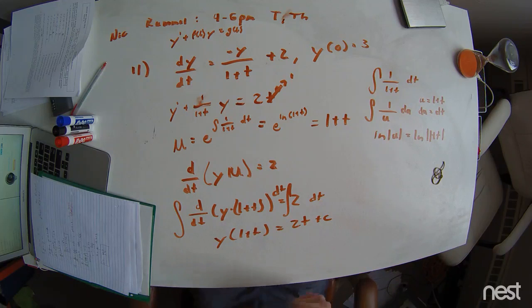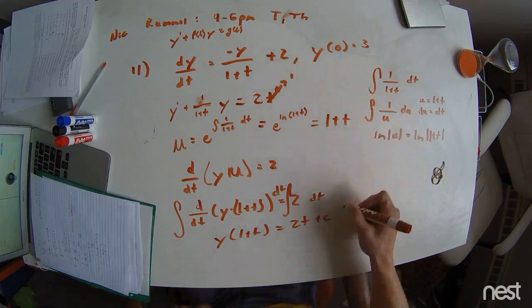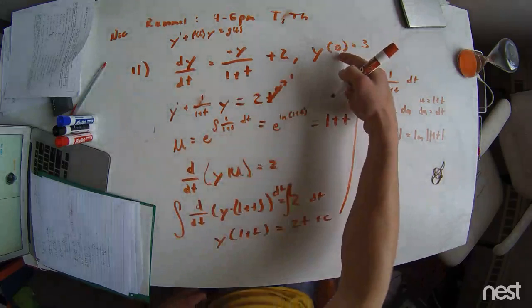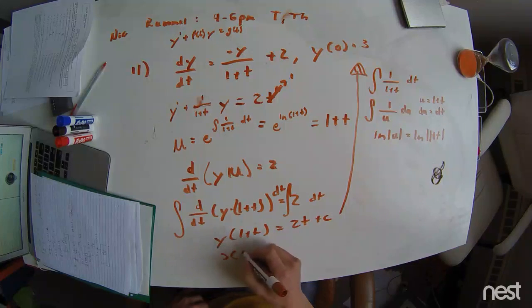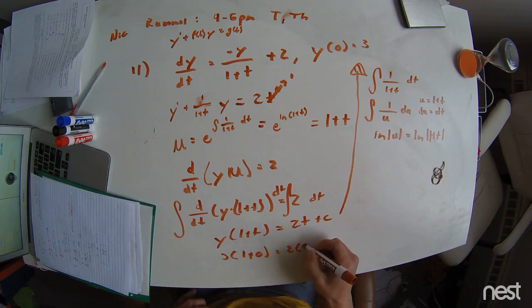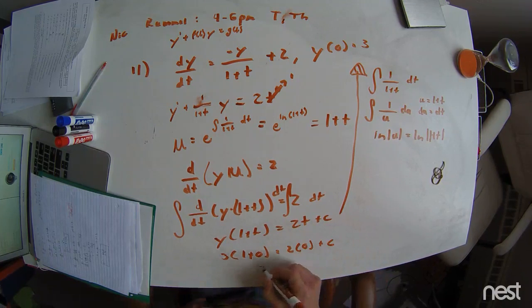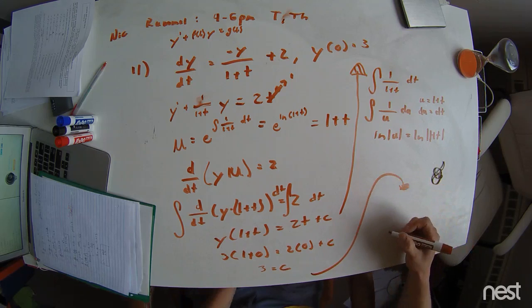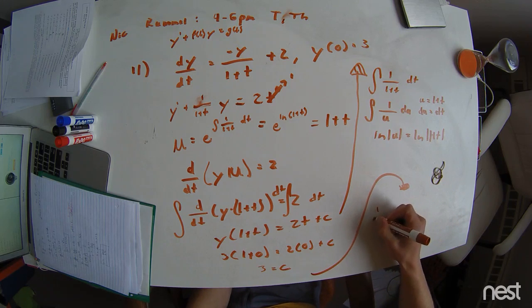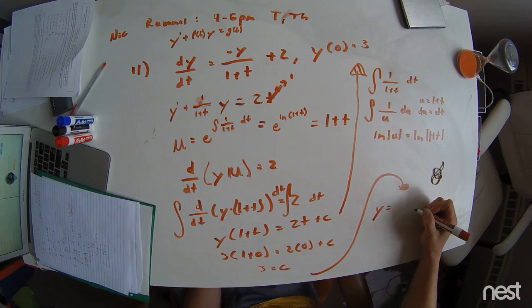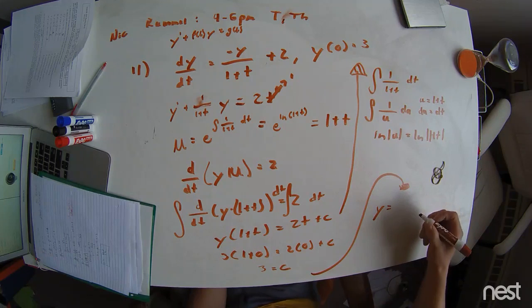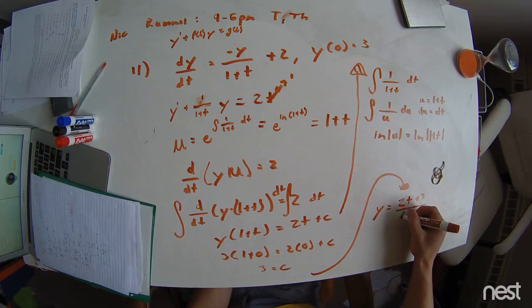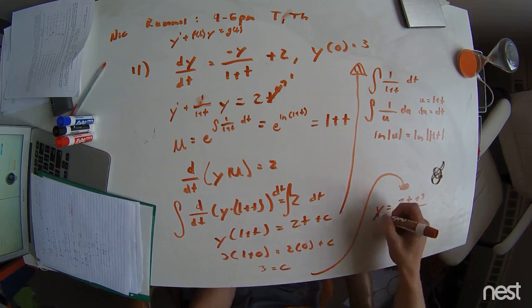We can rearrange this to get a solution for y, but right now we need to be remembering about our initial condition, which is important. So now we see that y, when t equals 0, equals 3. So we have 3 times 1 plus 0 equals 2 times 0 plus c. And we get that 3 equals c. And then over here, we'll write the final solution. And we see that y equals 2t plus 3 over t plus 1. And that is your solution.